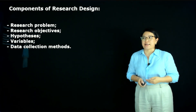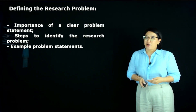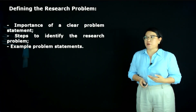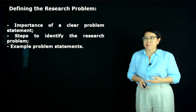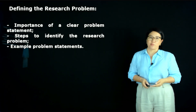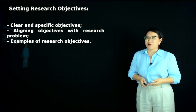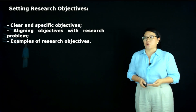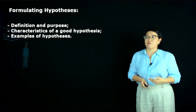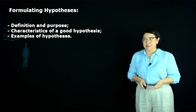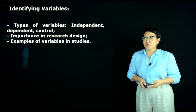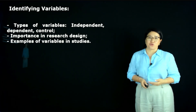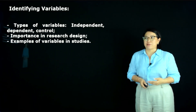The components of research design include: research problem, research objectives, hypotheses, variables, and data collection methods. For the research problem, we consider the importance of a clear problem statement, steps to devise the research problem, and example problem statements. Setting research objectives involves clear and specific objectives aligned with the research problem. Formulating hypotheses includes definition, purpose, characteristics of a good hypothesis, and examples. Identifying variables covers types such as independent, dependent, and control variables.